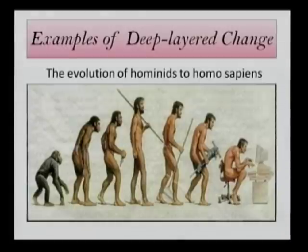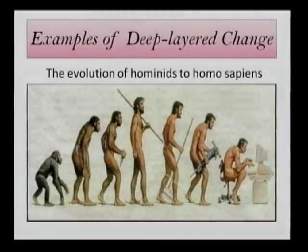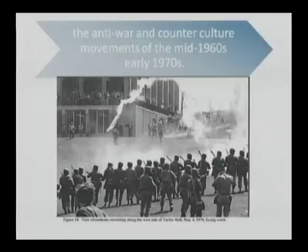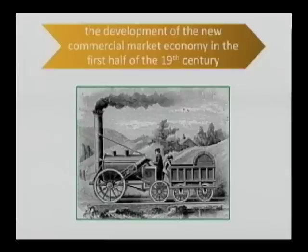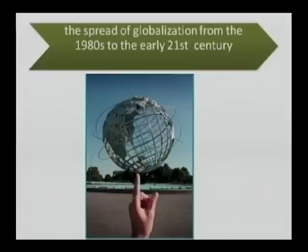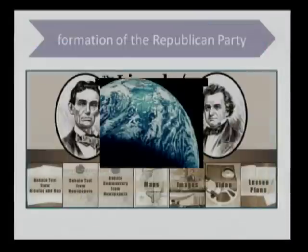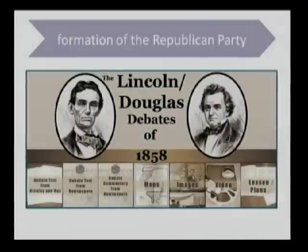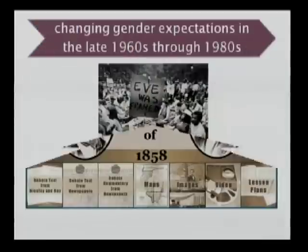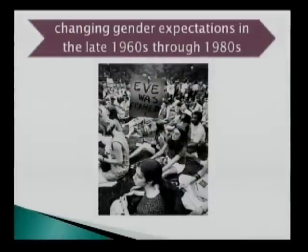The first example is one that took place over millions of years: the evolution of hominids to Homo sapiens sapiens. We have the anti-war and counterculture movements of the mid-1960s and early 1970s. We have the development of the new commercial market economy in the first half of the 19th century. The spread of globalization from the 1980s to the early 21st century. The evolution of the Earth's geography. The formation of the Republican Party in the mid-19th century. And finally, changing gender expectations in the late 1960s through the 1980s.